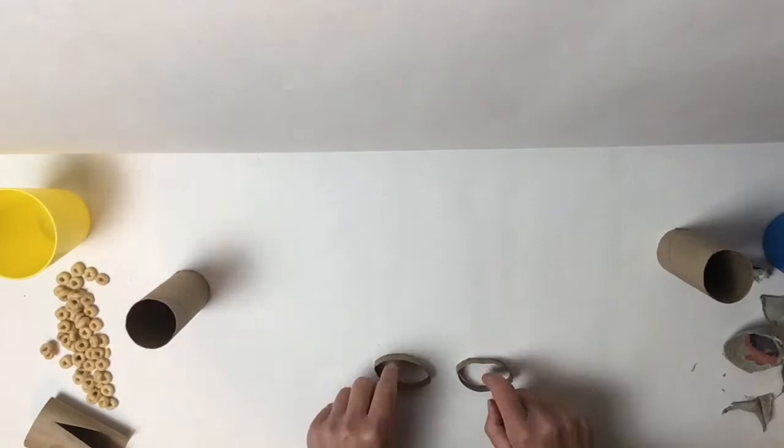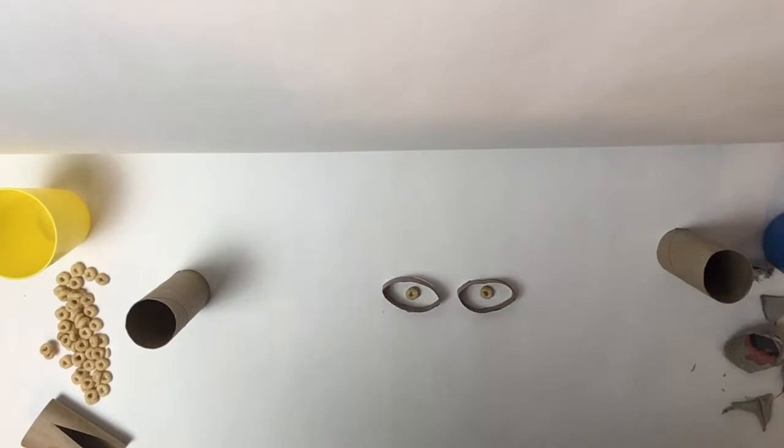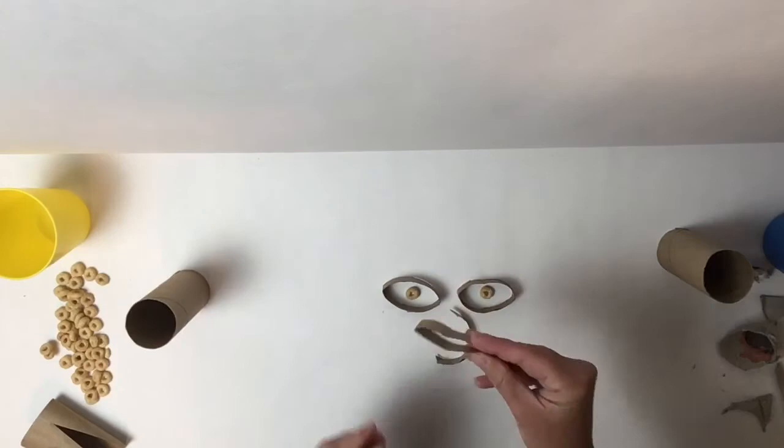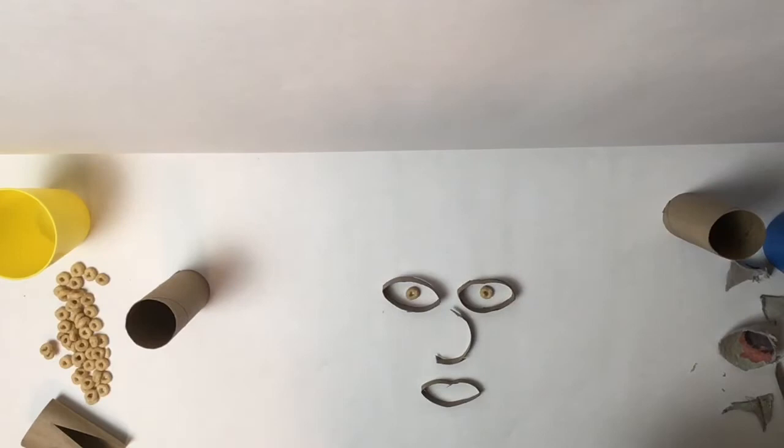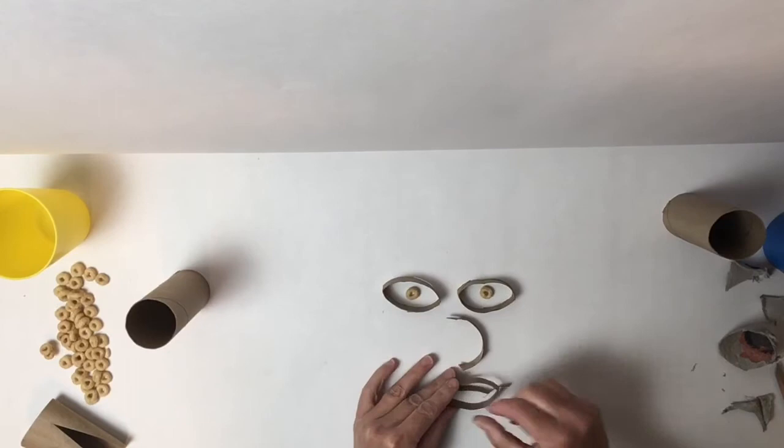I cut a few more of those little loops out of the toilet paper tube for my eyes. I'm going to use some Cheerios as eyeballs. Another little piece of cardboard for the nose. And I like those lips that I had before so I'm going to use those again. Let's see if I can fit that in there. It doesn't look like it's going to work so I'm not going to do that.